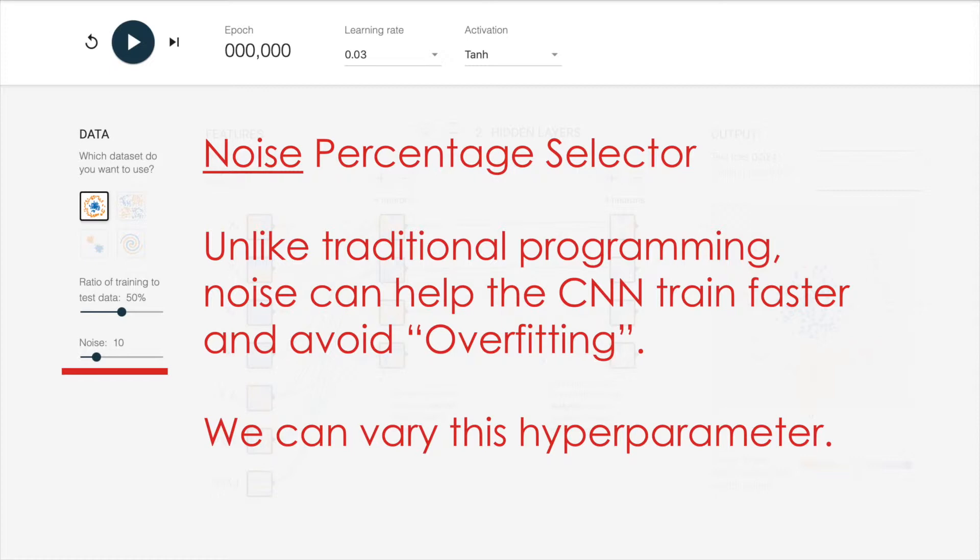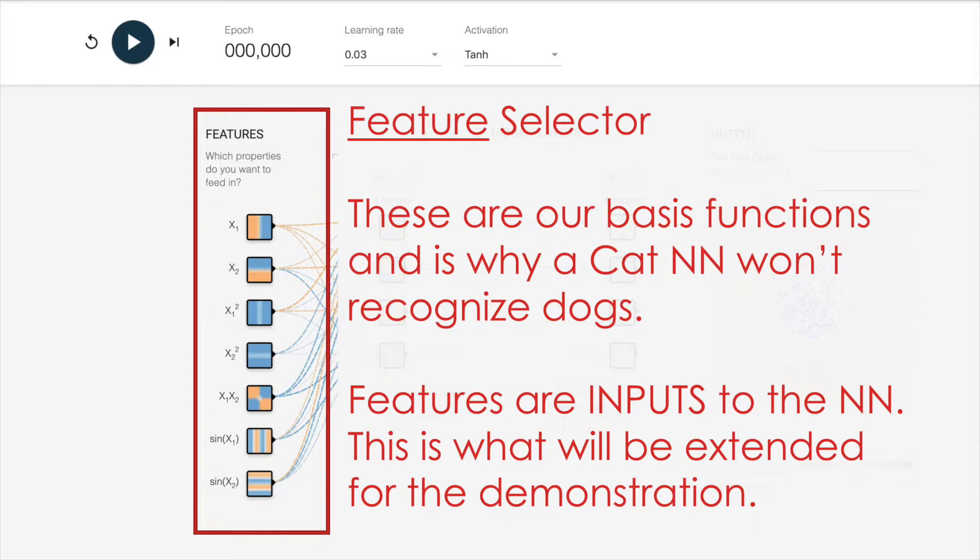This hyperparameter can be varied as well, and you usually want on the order of 10 percent or so of noise in your training session, so that when you present the system with new data that will fit within that bound. The feature selector is the main thing that I've modified. These are the basis functions that come with TensorFlow Playground, and they're also the input to the neural network, and it's what we're going to extend in the demonstration to show hopefully some improvement in how the system works.